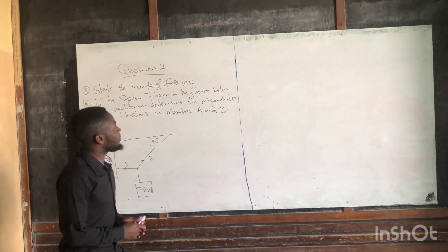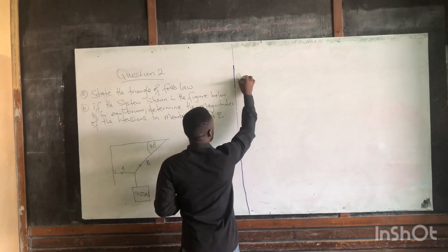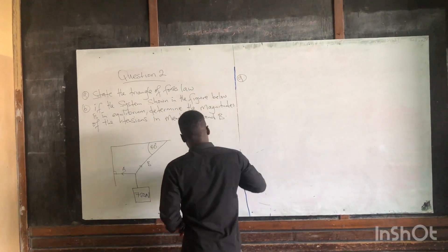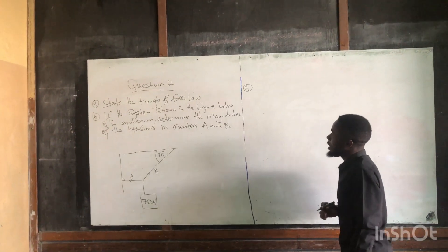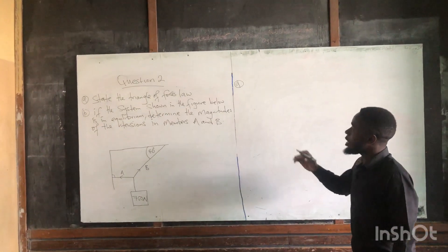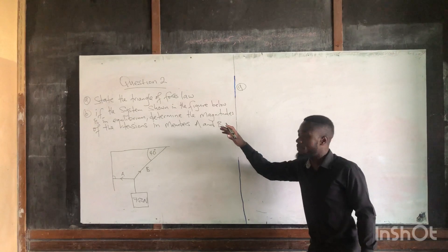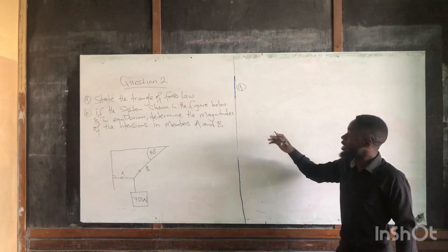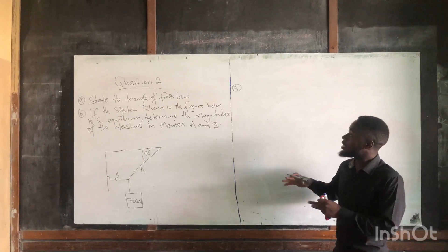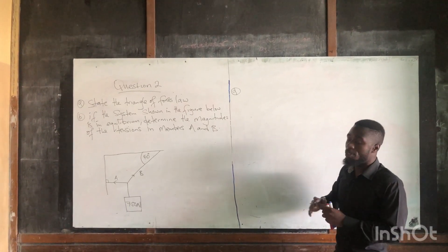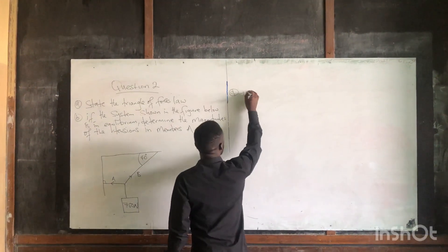So let's start with the first one. What is the triangle of forces law? The triangle of forces law states that if two concurrent forces are acting simultaneously at a point, given in magnitude and direction, the third side of the triangle will be the resultant.